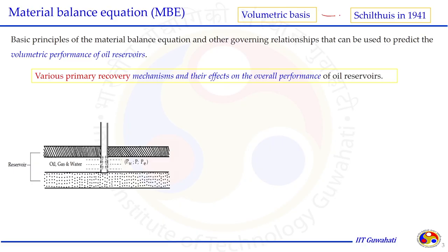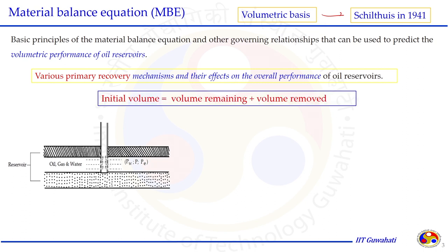The material balance on a volumetric basis was given by Schilthuis in 1941. It is a simple way of understanding what happens in the reservoir volumetrically. In simple language: the initial volume of the reservoir equals the volume remaining in the reservoir plus the volume recovered — that is, the oil, gas, and water recovered.